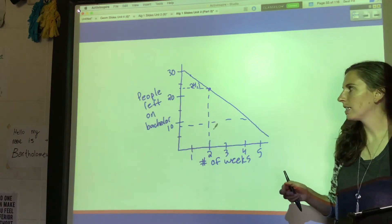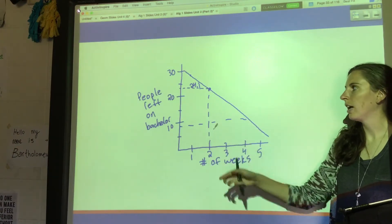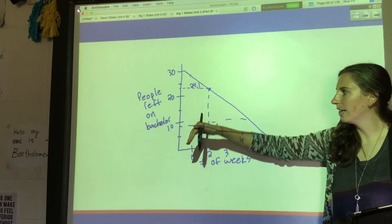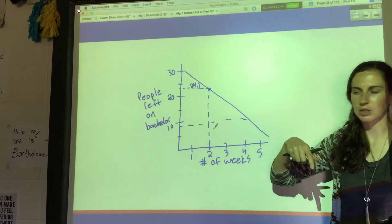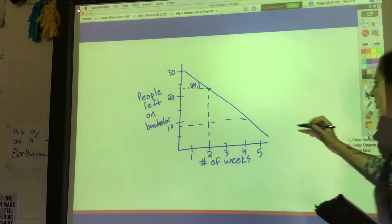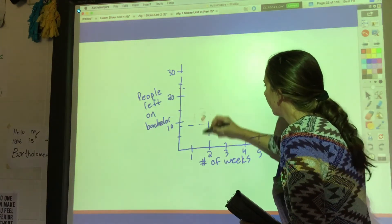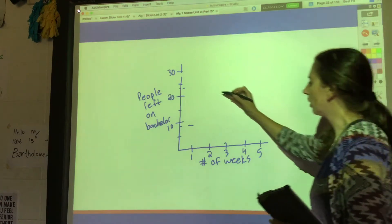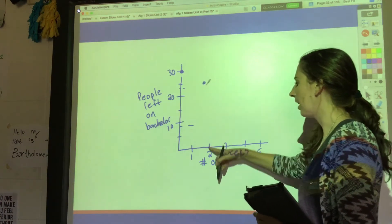What I want instead are kind of separate values that only hit on the week and only hit on like whole people. You shouldn't ever have like 0.1 of a person. So instead of drawing a line, it would have made more sense to, let me just erase some of this, it would have made more sense to just do like I've got 30 people left at the beginning,